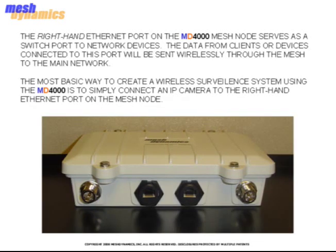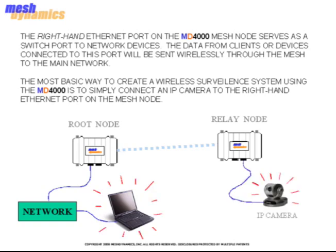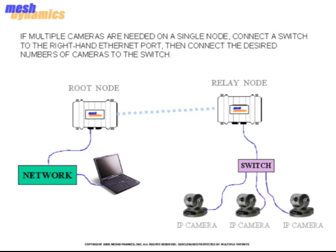The right-hand Ethernet port on the MD-4000 mesh node serves as a switch port to network devices. The data from clients or devices connected to this port will be sent wirelessly through the mesh to the main network. The most basic way to create a wireless surveillance system using the MD-4000 is to simply connect an IP camera to the right-hand Ethernet port on the mesh node. If multiple cameras are needed on a single node, connect a switch to the right-hand Ethernet port, then connect the desired number of cameras to the switch.